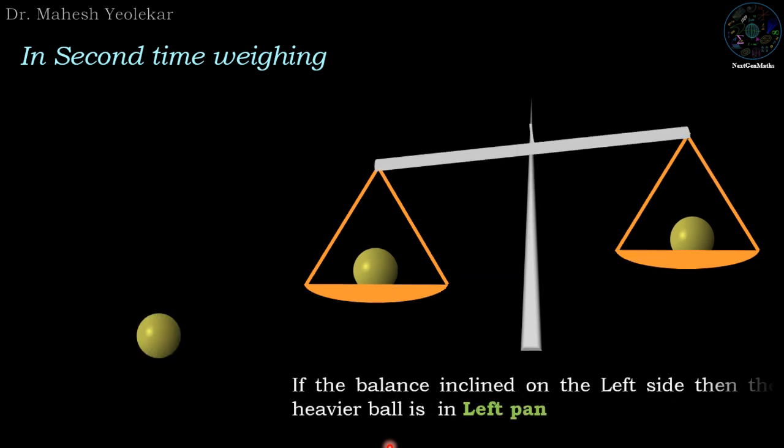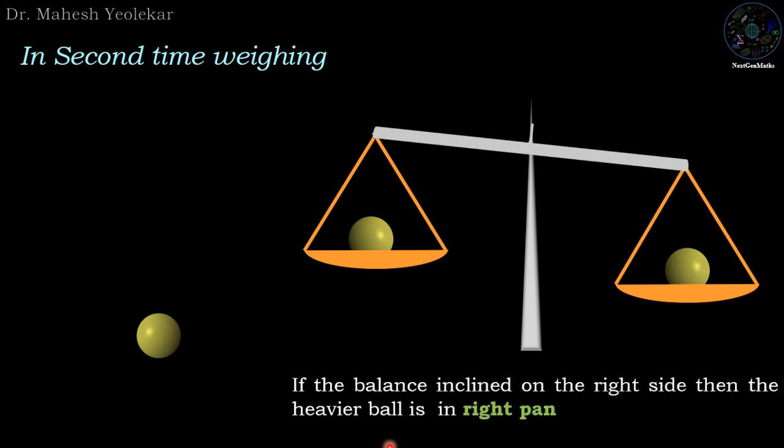If the balance inclined on the left side then the heavier ball is in the left pan. If the balance inclined on the right hand side then the heavier ball is in the right pan.